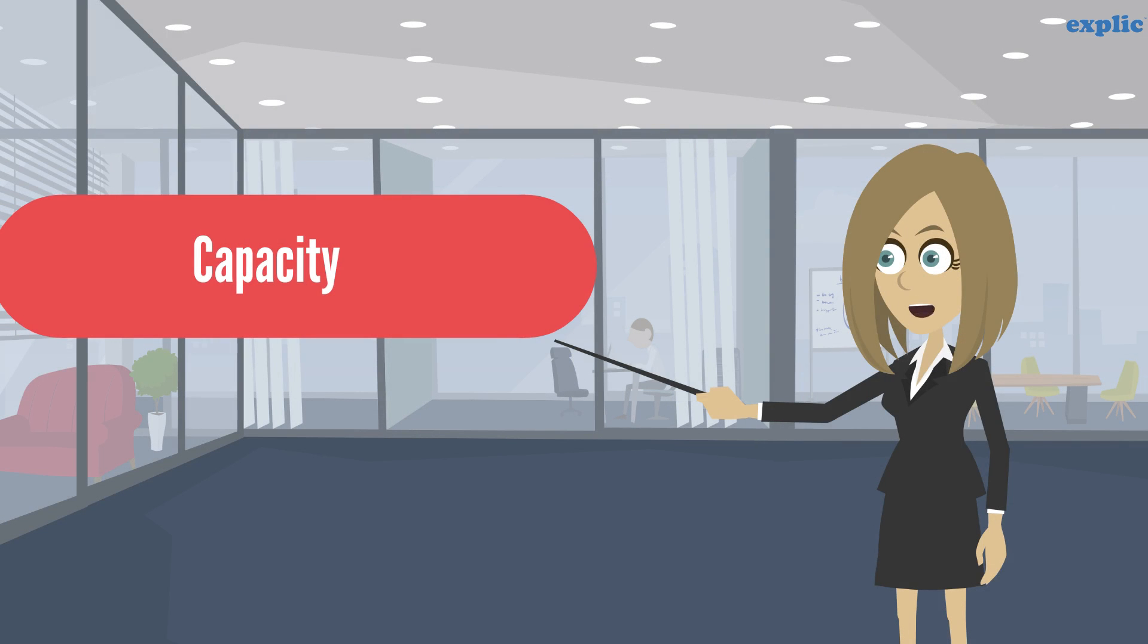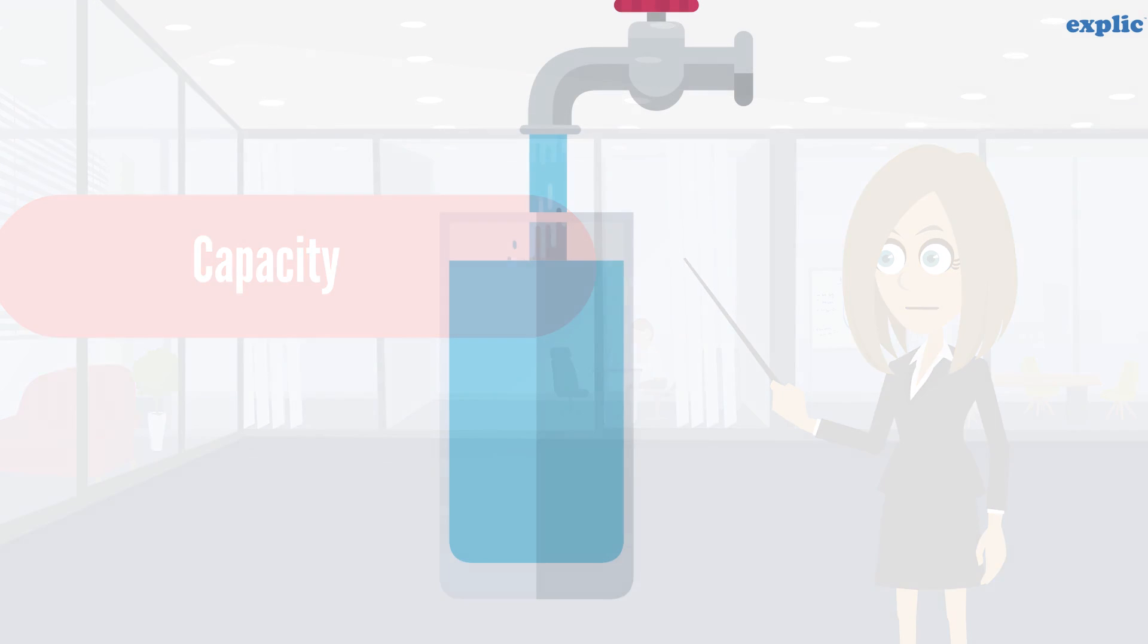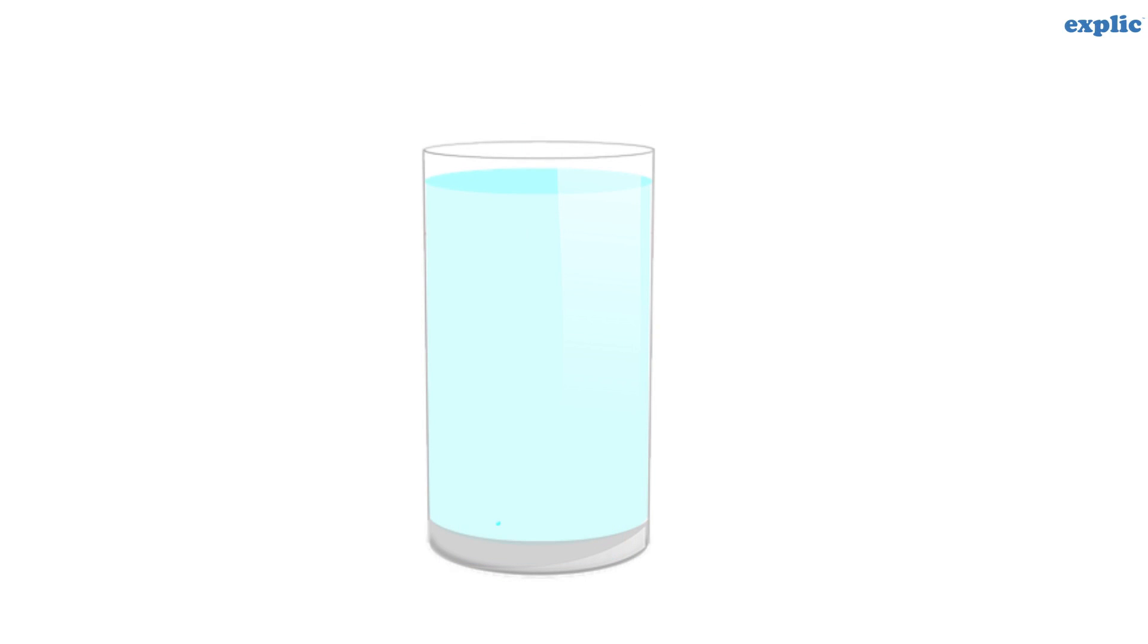Capacity is the measurement or quantity a container can hold. If the capacity of a glass is 200 ml, that means it can hold 200 ml water. Space occupied by glass is volume, and quantity of water it can hold is capacity.